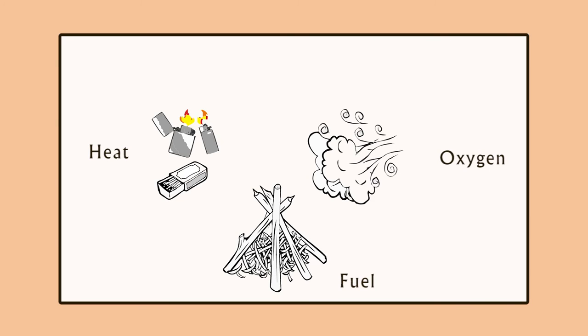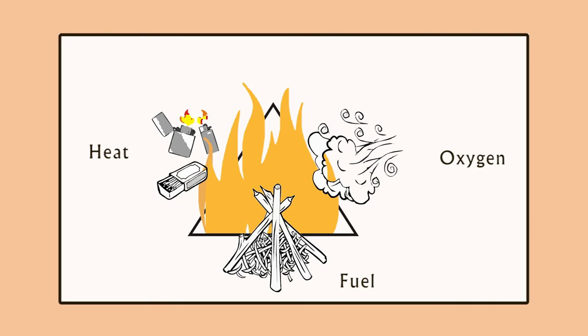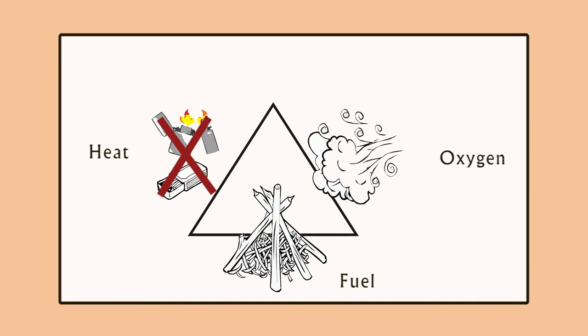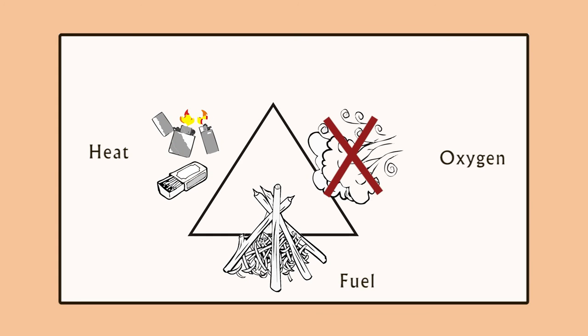Fuel, heat, and oxygen are the three elements necessary for fire. Fire can be prevented or extinguished by removing any one of these three elements. Heat is a must for any fuel to ignite — without heat, fire cannot begin. If heat is removed, which is often done with water, fire cannot continue. Without fuel, there is no fire. Also, in the absence of oxygen, fire extinguishes.